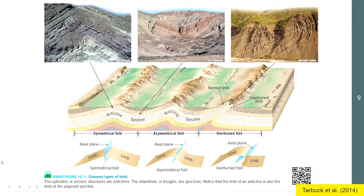Here we see actual examples of anticline and syncline in rock formations. In the first photo you see an anticline — a ridge shape, almost the upper part of a triangle — formed due to symmetrical folding of the rock layer. Then we have the syncline, the inverse of anticline, showing a letter-V shape formation of the rocks.